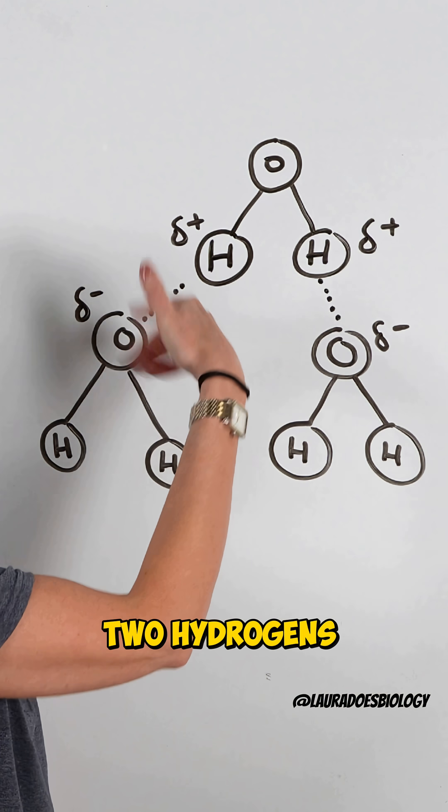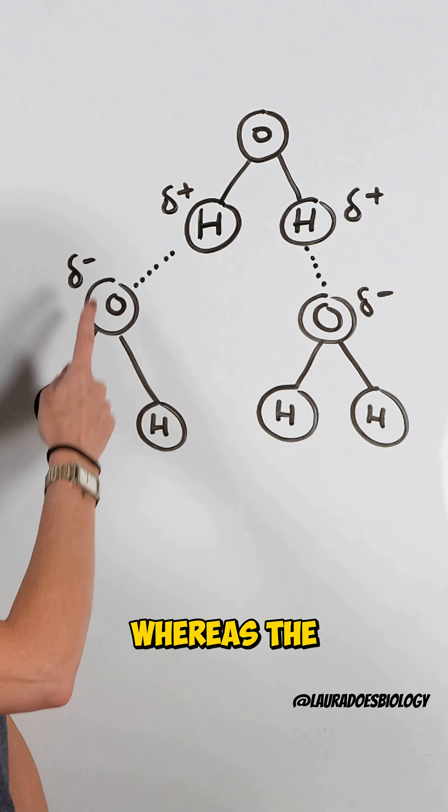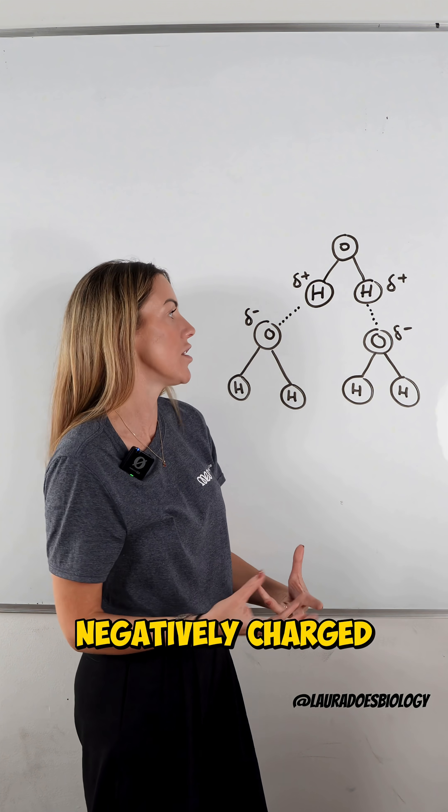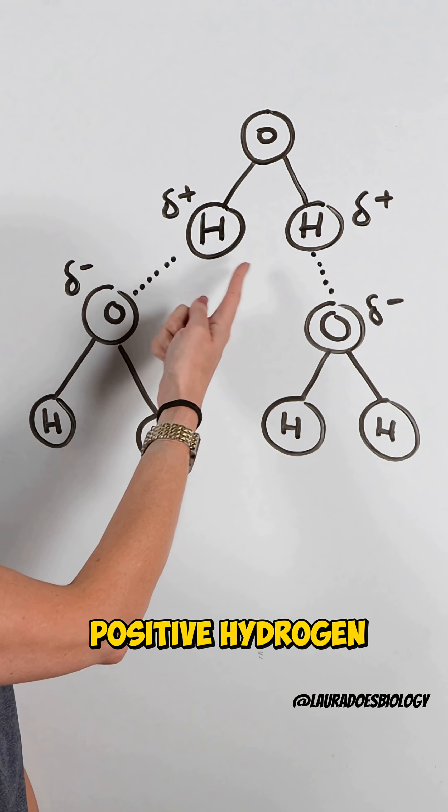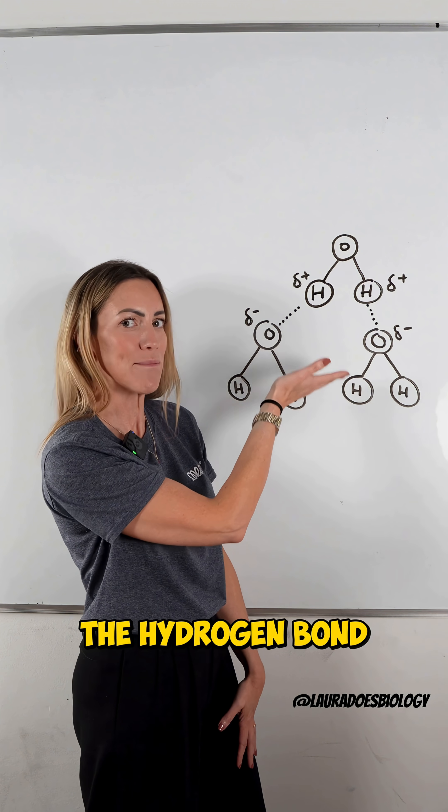Each water molecule has two hydrogens and an oxygen. The hydrogens are slightly positively charged, whereas the oxygens are slightly negatively charged. The positive hydrogen is attracted to the negatively charged oxygen, and that's what forms the hydrogen bond.